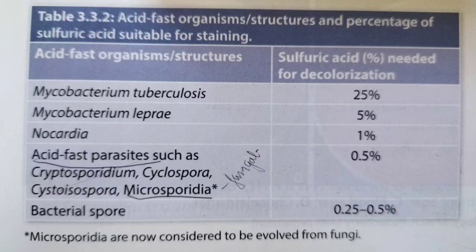Most commonly asked viva questions for acid fast staining: name organisms which show acid fastness and what amount of decolorizer to use. For Mycobacterium tuberculosis use 20%, for Mycobacterium leprae use 5%, for Nocardia use 1%, for Cryptosporidium, Cyclospora, and Microsporidia use 0.5%, and for bacterial spores use 0.25 to 0.5%. Take a screenshot of this.